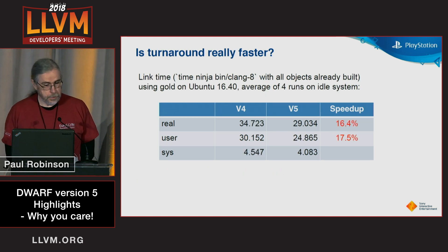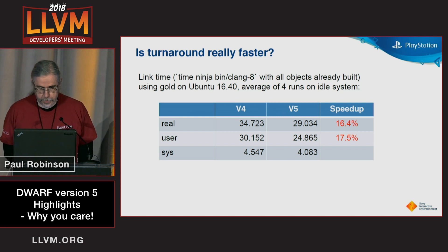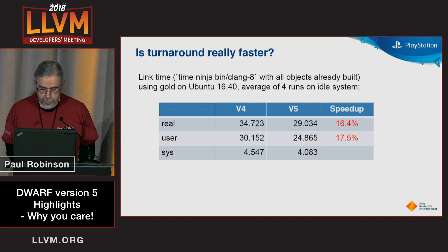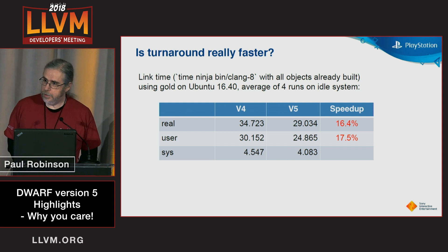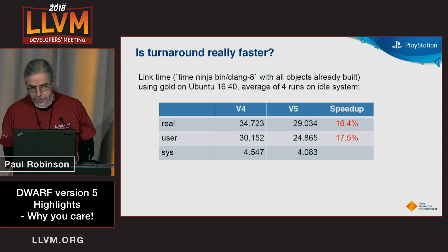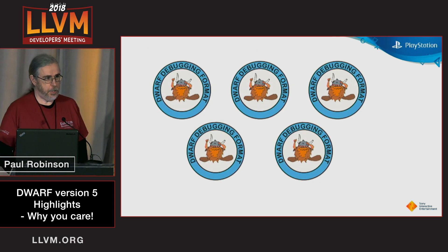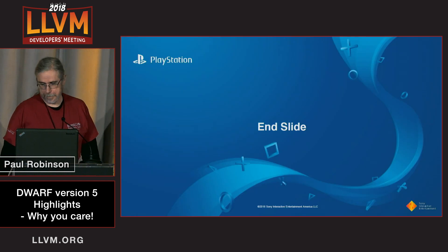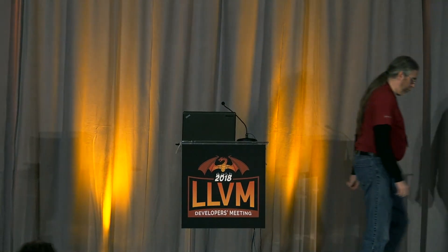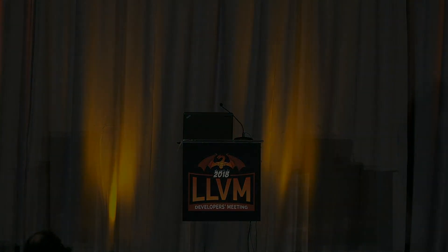The final question: is it really faster? I did some measurements of linking Clang, and it is faster — 16% faster. So, my Olympic dwarves: smaller, stronger, faster. Thank you.